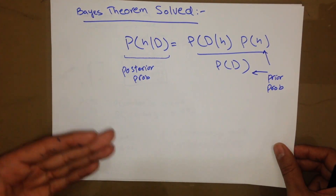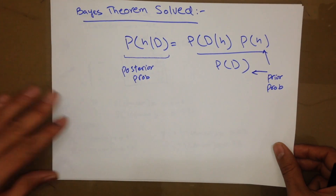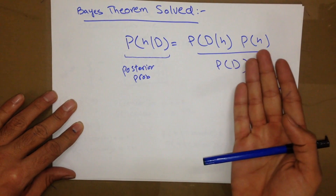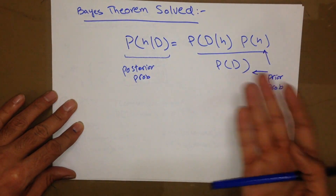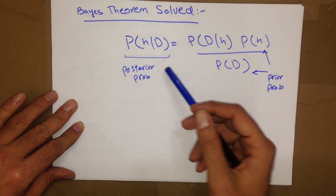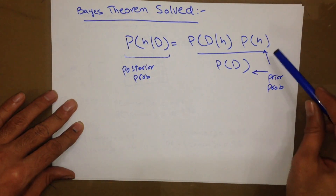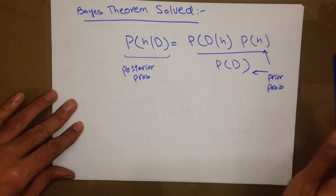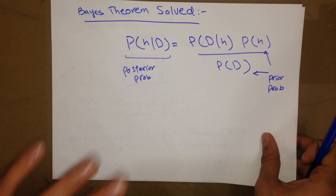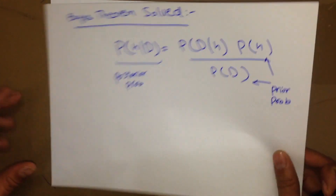We have seen the probability formula for the Bayesian theorem. This is P(H|D), this is P(D|H), this is P(X) divided by P(D). So we have posterior probability and then we have prior probability, and this is the specific formula for Bayesian theorem.